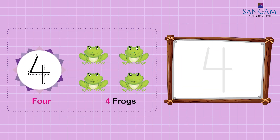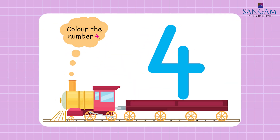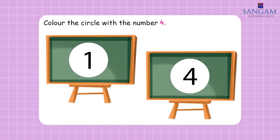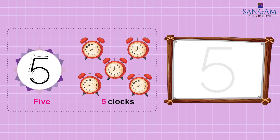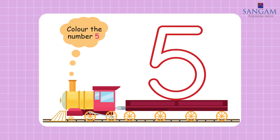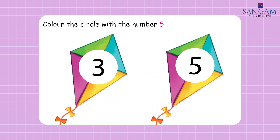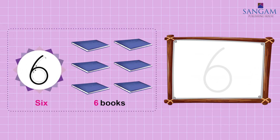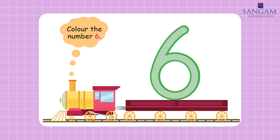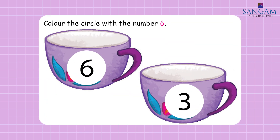Four. Four frogs. Trace the number four in the boxes. Colour the number four. Colour the circle with number four. Five. Five clocks. Trace the number five in the boxes. Colour the number five. Six. Six books. Trace the number six in the boxes. Colour the number six. Colour the circle with number six.